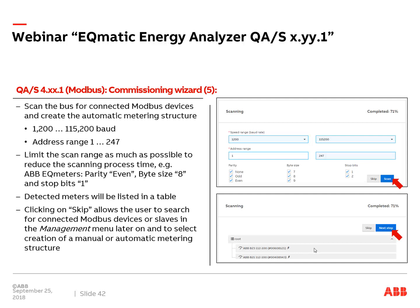For MBUS scanning, one option is scanning via the primary address — between 1 and 250 — which you set in the meter menu. Maximum 16 or 64 meters, with baud rates between 300 and 9,600. You can have meters with different baud rates in one system, for example an energy meter at 9,600 baud and a water meter at 1,200 baud. The secondary address option uses the serial number of each meter, so the primary address doesn't matter. After scanning, you get a list of all detected meters. It is recommended to limit the address range and baud rate range to save time during scanning.